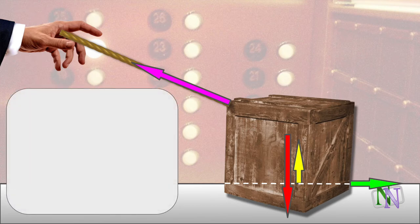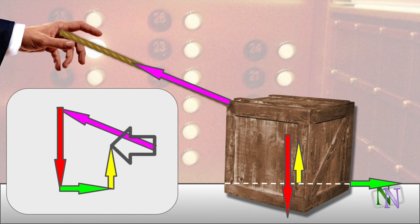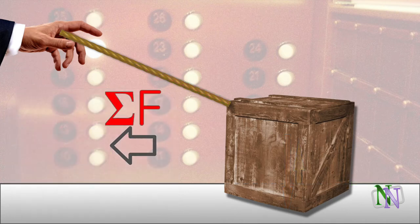To discover the resultant force acting on the crate, which would have the same effect as all four forces combined, we perform vector addition. The forces are drawn to scale, and are now added to each other nose to tail. The order is not important. The resultant will be the same. The resultant will be the vector from the start of the first arrow to the end of the last. This is the resultant force acting on the crate.